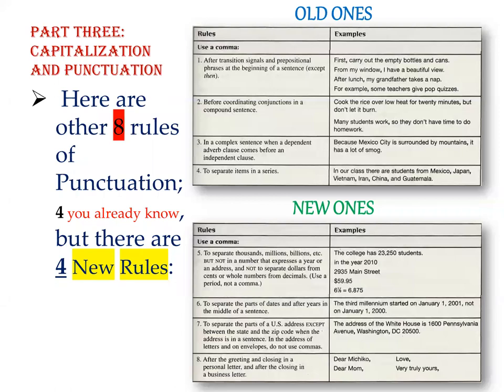Use a comma to separate the parts of dates and after years in the middle of a sentence. We put a comma after the day and after the year, but not after the month. For example: 'The third millennium started on January 1, 2001.' Also, use a comma to separate the parts of a US address, except between the state and the zip code.